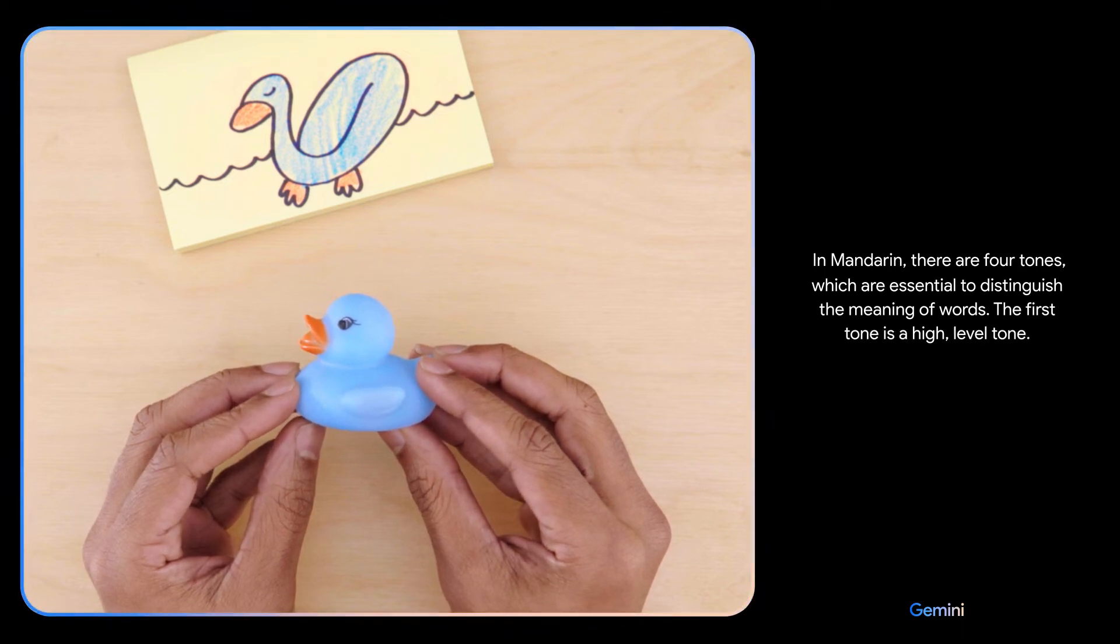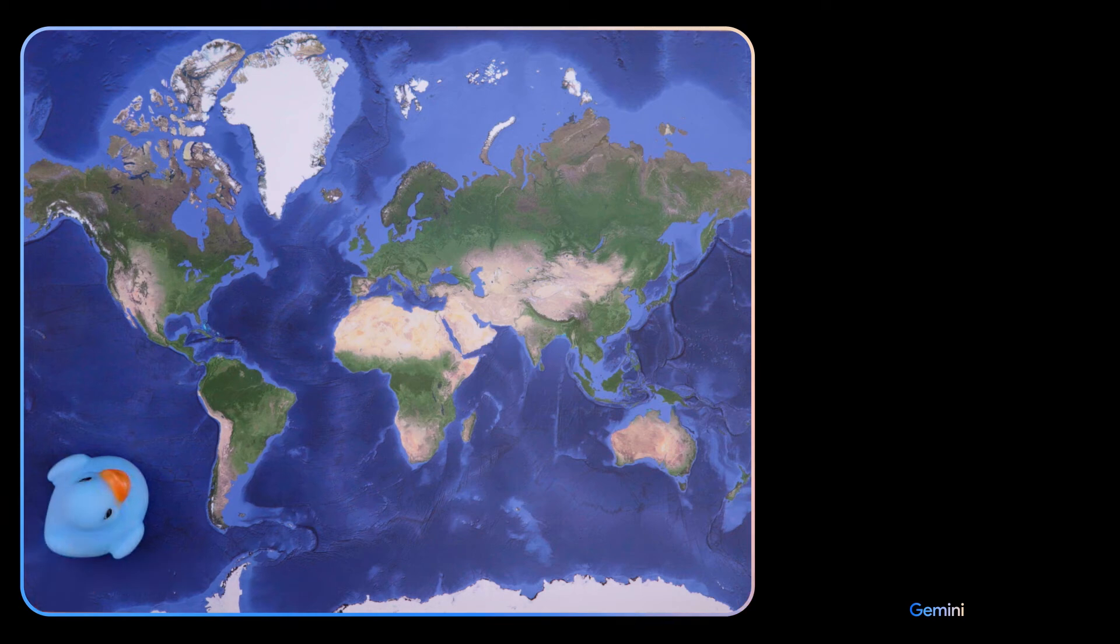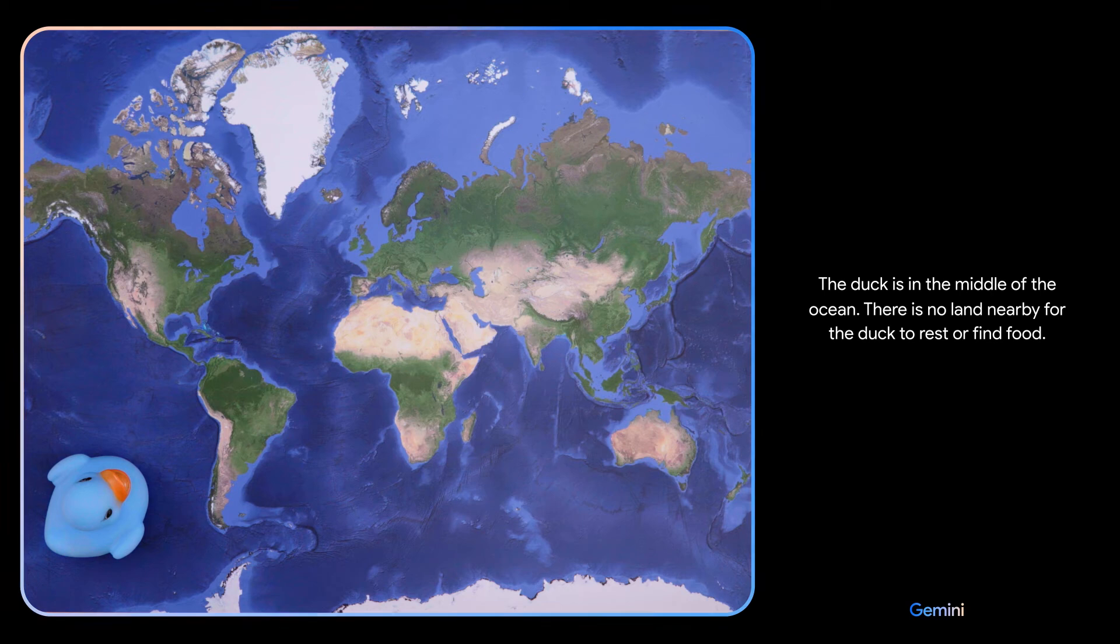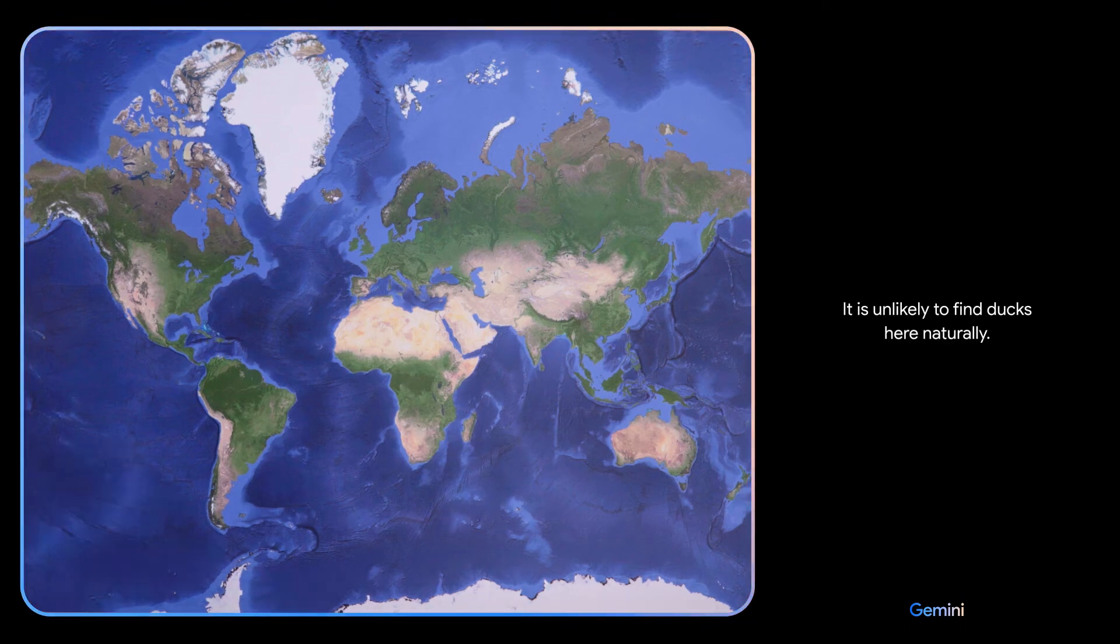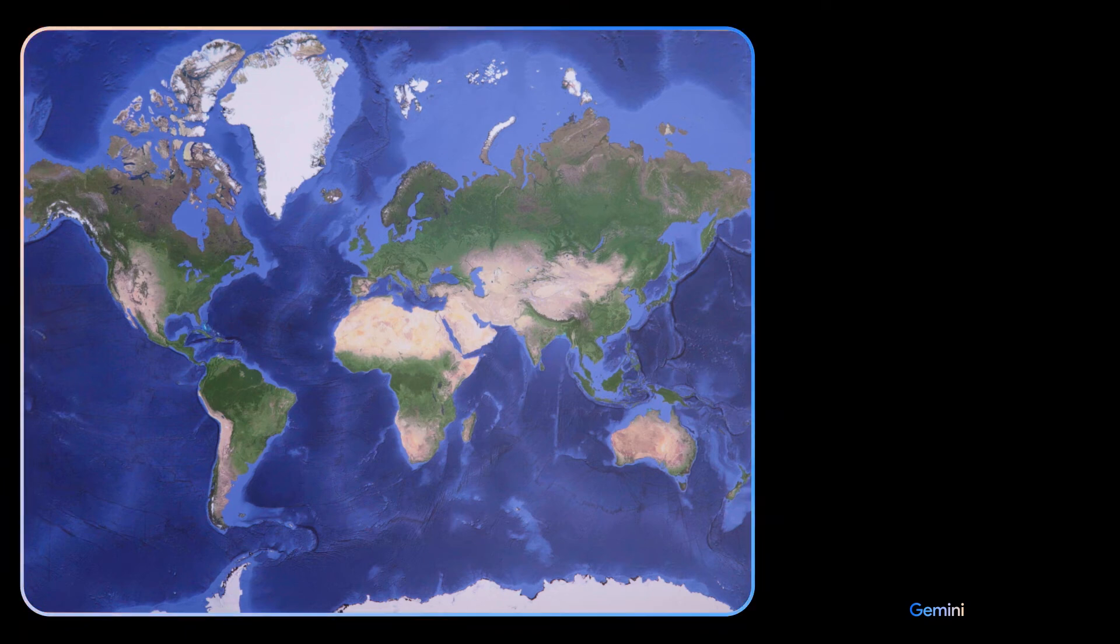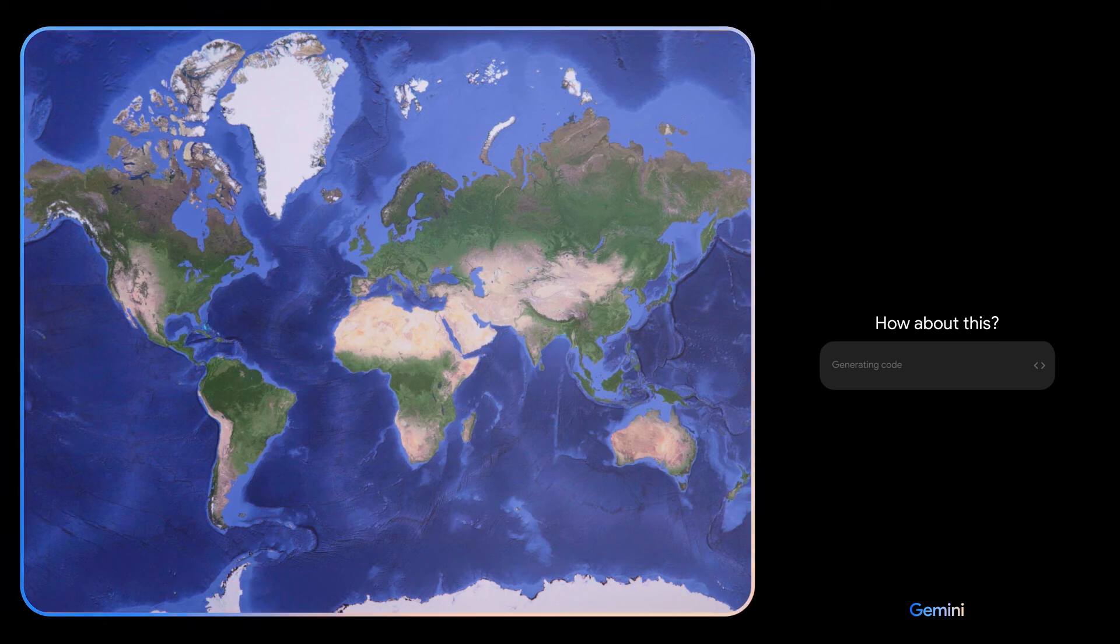The duck is in the middle of the ocean. There is no land nearby for the duck to rest or find food. It is unlikely to find ducks here naturally. Okay, based on what you see, come up with a game idea. Oh, and use emojis please. How about this? We can play a game called Guess the Country.